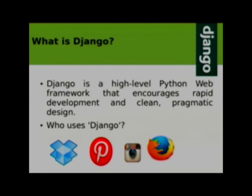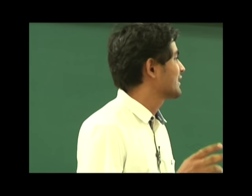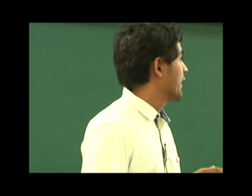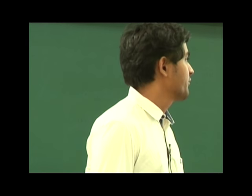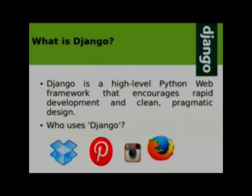So, what is Django? Django is a high-level Python web framework that encourages rapid development and clean and pragmatic design. In one sentence, the complete Django has been explained. I'll explain it one by one. The keywords being: high-level Python web framework, clean and pragmatic design, and rapid development.